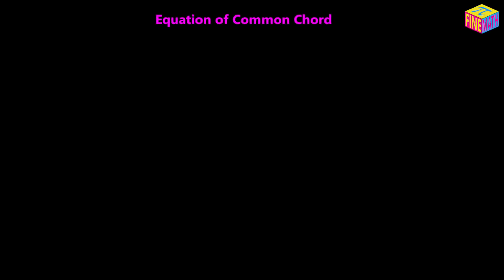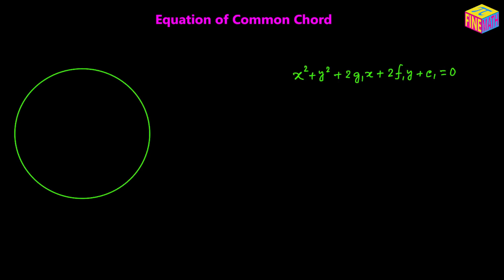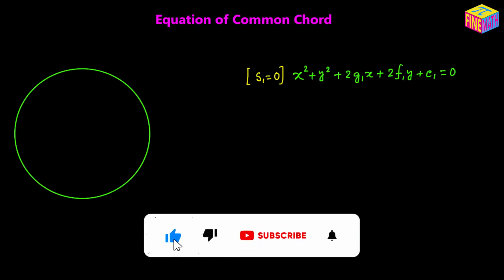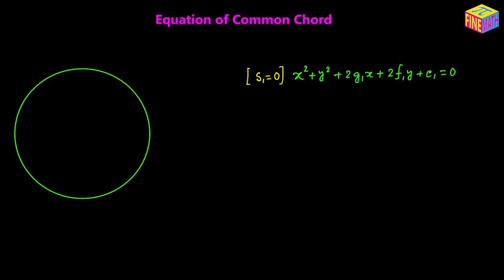Hi everyone. In this video we are going to see how to derive the equation of the common chord for two intersecting circles. Let's suppose we have a circle whose equation is given as x squared plus y squared plus 2 g sub 1 x plus 2 f sub 1 y plus c sub 1 is equal to 0, and let's denote that as s sub 1 equals 0. The left hand side expression of the equation is denoted by s sub 1.